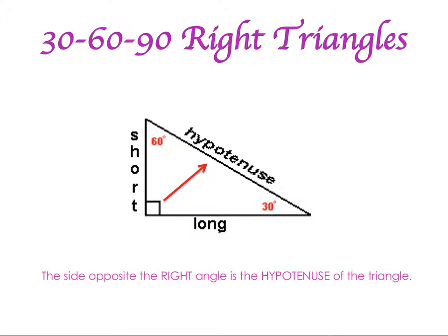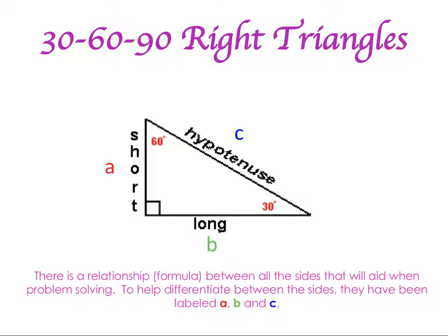It can also help you visualize what it is that you're looking for. For this lesson, I'm going to label each of the sides as A, B, and C. We always use variables X, Y, and Z, but I didn't want to be confused when talking about the sides of the triangle. So our short side will be identified as A, our long side will be identified as B, and the hypotenuse will be C.